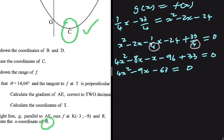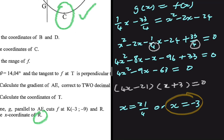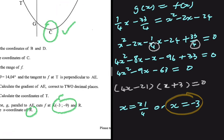Now we factorize. Because of the coefficient of 4, you can use the quadratic formula. Factorizing gives (4x - 21)(x + 3) = 0. So x = 21/4 or x = -3. We know x = -3 is the x-value of K, which tells us that x = 21/4 is the x-coordinate of R.